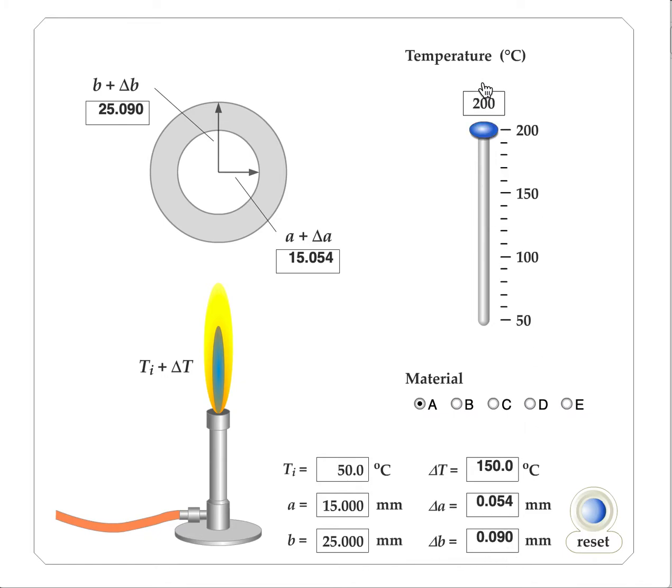So I'm going to go ahead and move this back down to 50 degrees Celsius, and I'm going to change this to material B. We notice that this material is going to be different, but it has the same inner radius and the same outer radius. So it's identical in terms of its size to start with. And as I increase the temperature, I notice that this material also expands, but it expands differently because it's made of a different material.